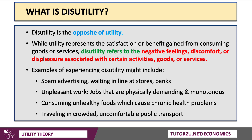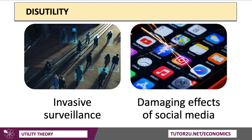There is something called disutility — the opposite of utility — and it represents the negative feelings, the discomfort, the pain, the displeasure associated with certain activities. Examples include being afflicted by unpleasant spam advertising, long queues at stores, banks, and transport services. Unpleasant work gives you disutility and often leads to work-related stress. The disutility of consuming fast food over time causes chronic health problems, as does travelling in crowded commuter public transport. Further examples include invasive surveillance, social isolation, and the damaging effects of criticism on social media.